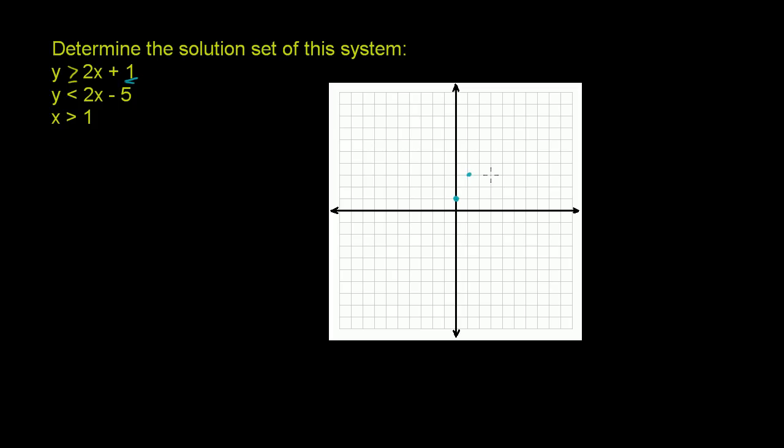If we move forward 2, we'll move up 4. Just like that. So this graph is going to look something like this. Let me graph a couple more points here, just so that I make sure that I'm drawing it reasonably accurately. It looks something like that.